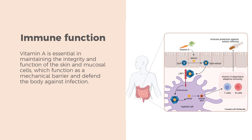Vitamin A is required for the normal functioning of the immune system and helps to protect against infections in a number of ways. Vitamin A is essential in maintaining the integrity and function of the skin and mucosal cells, which function as a mechanical barrier and defend the body against infection. Vitamin A also plays a central role in the development and differentiation of white blood cells, such as lymphocytes, killer cells, and phagocytes, which play a critical role in the defense of the body against pathogens.